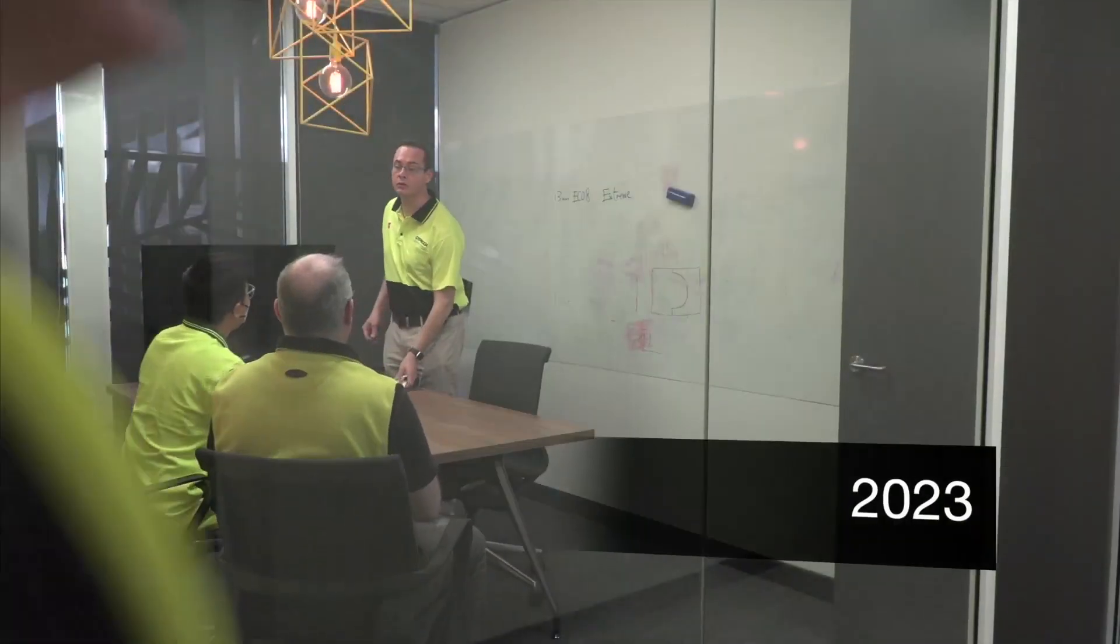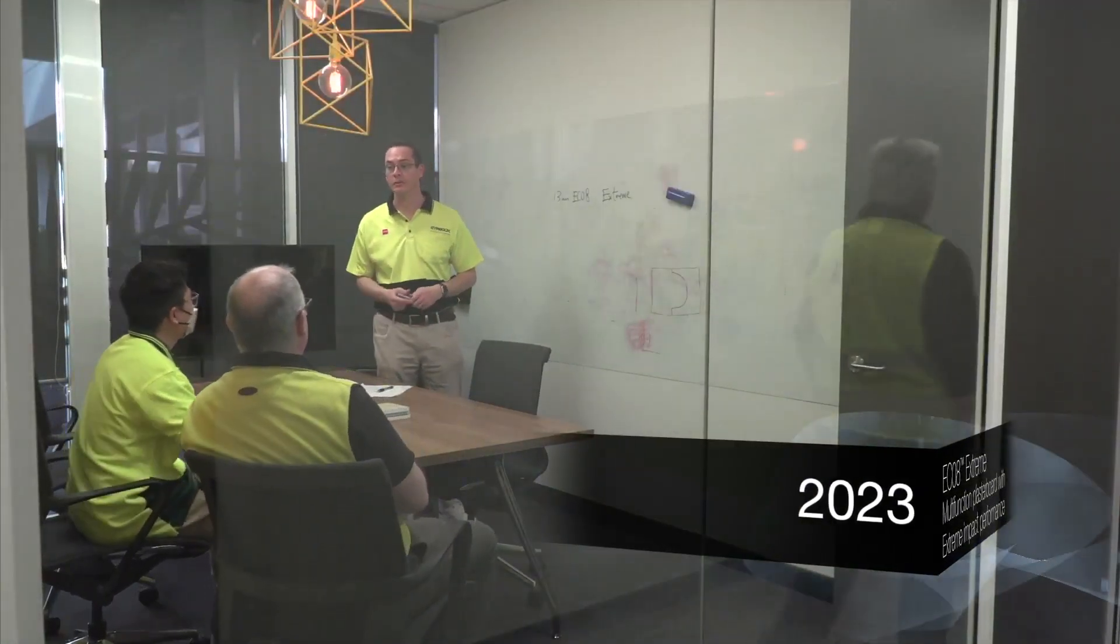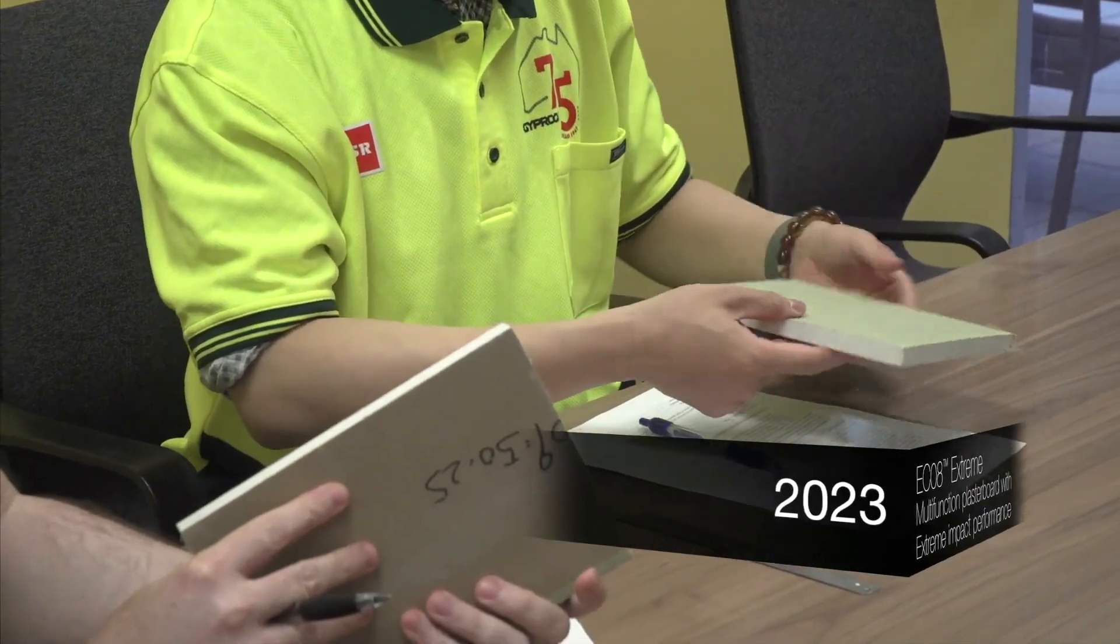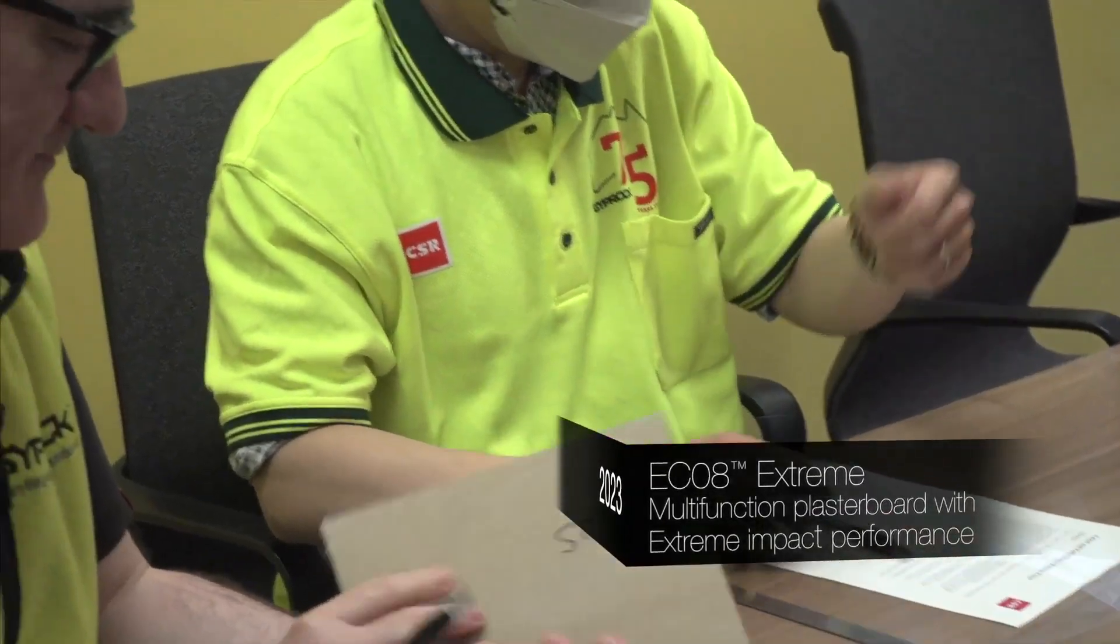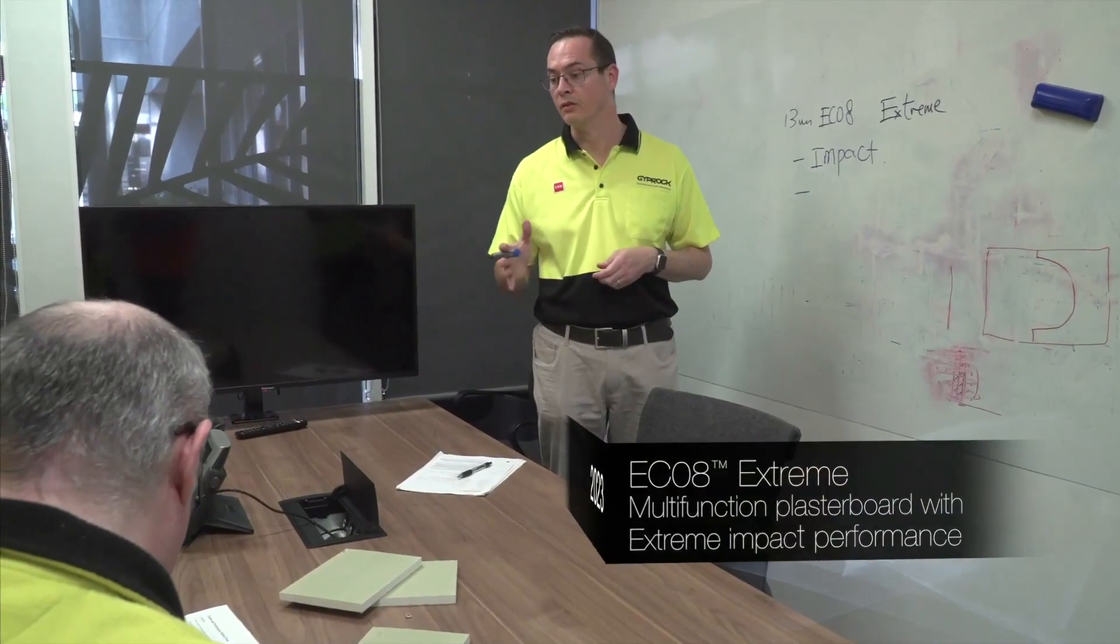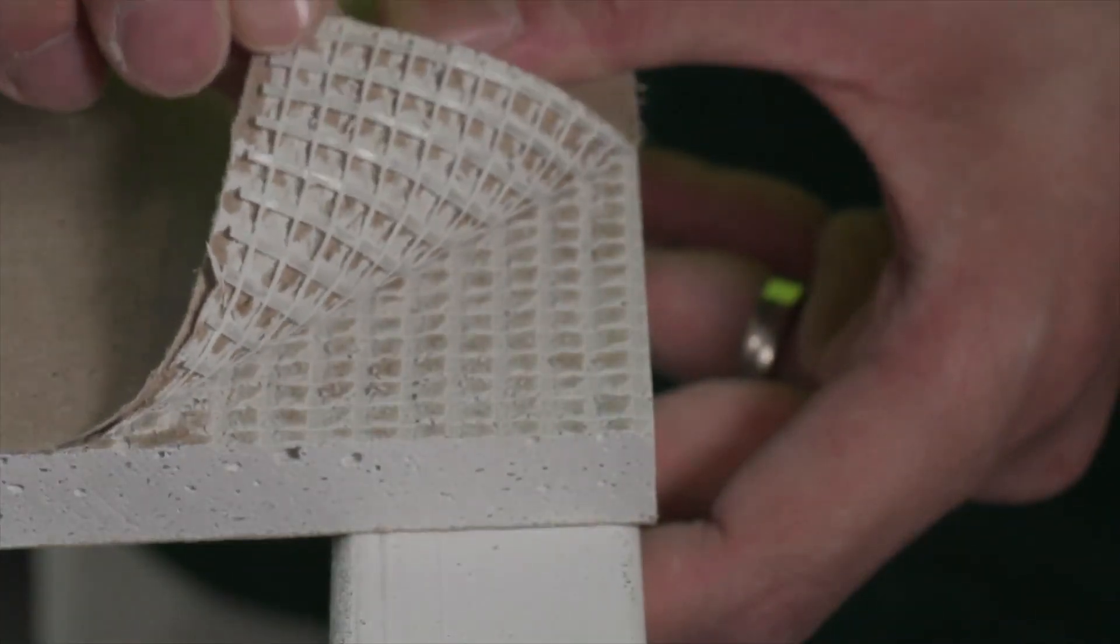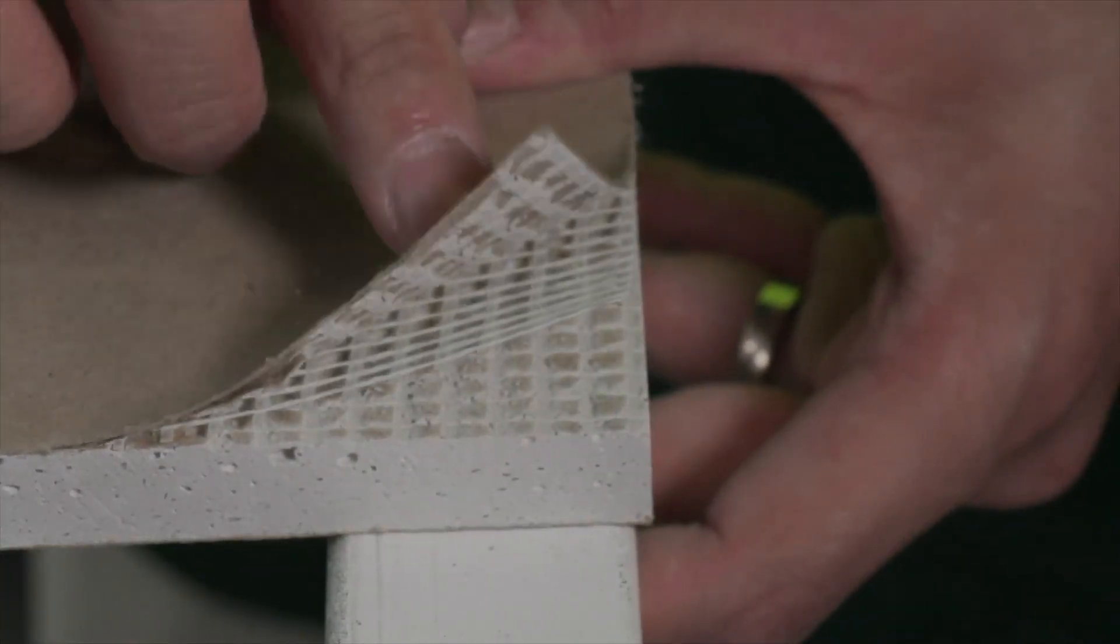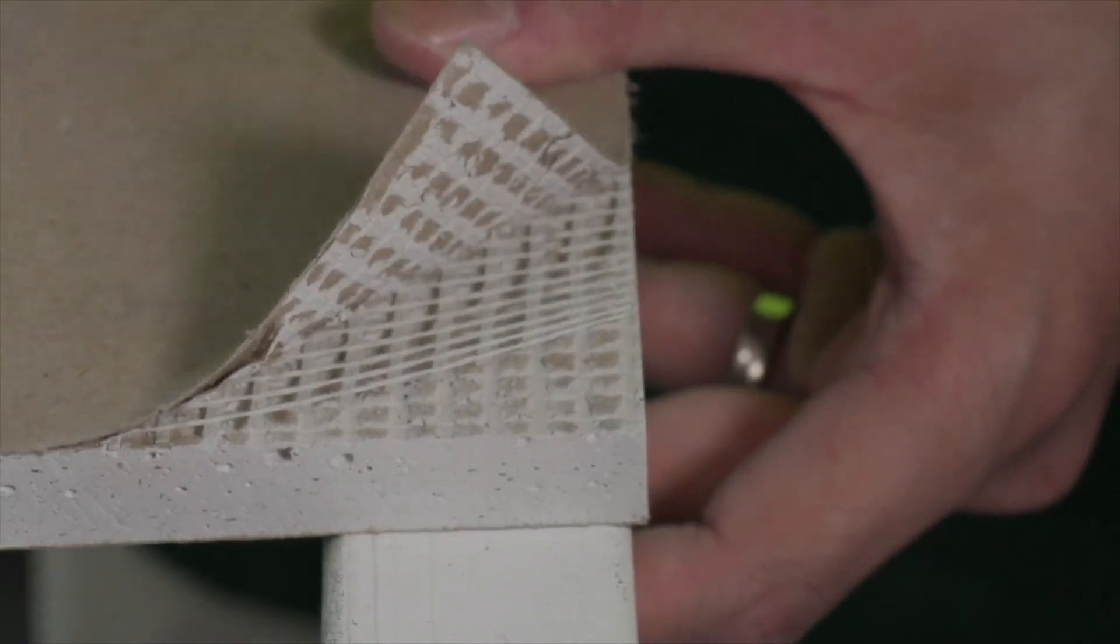More recently, in response to the need for a broad performance wall-lining solution with increased impact resistance, Chiprock has developed EC08 Extreme, a 13mm plasterboard with thick lining paper, a dense, fiber-reinforced core and a layer of strong mesh.